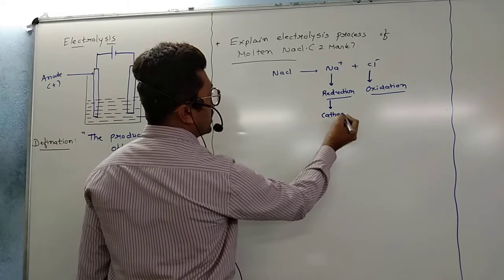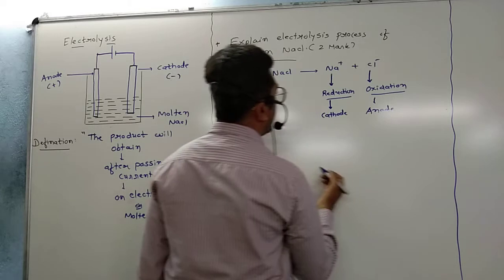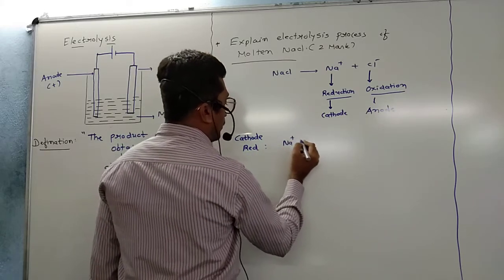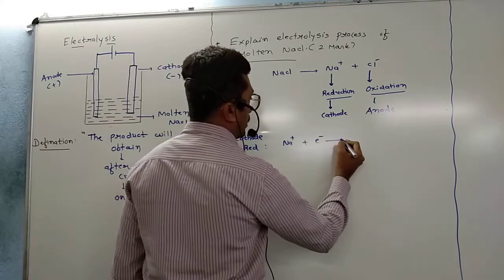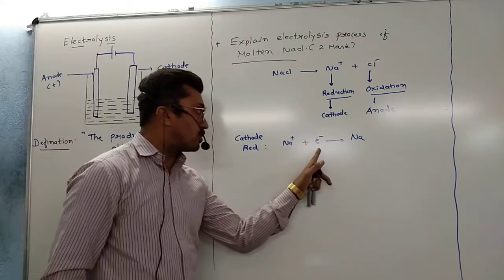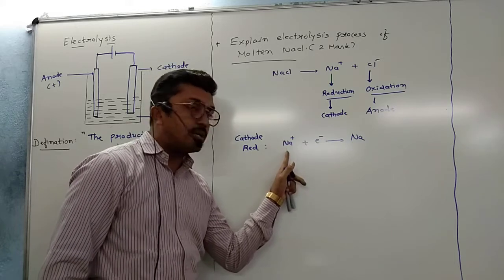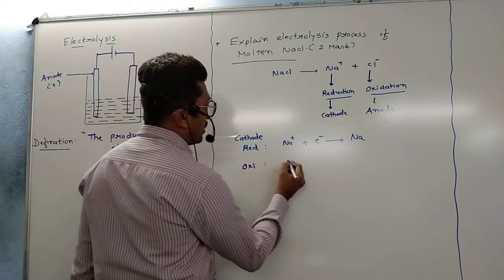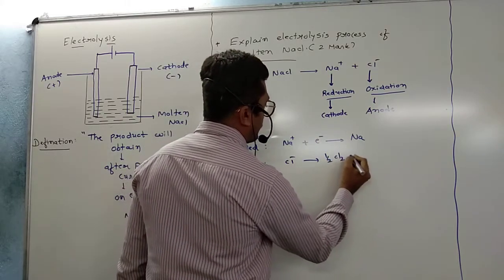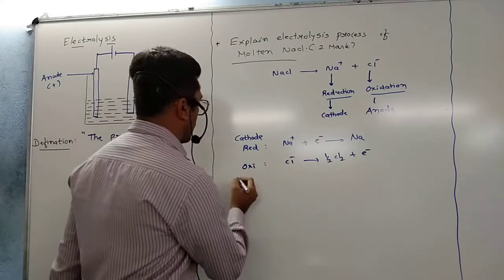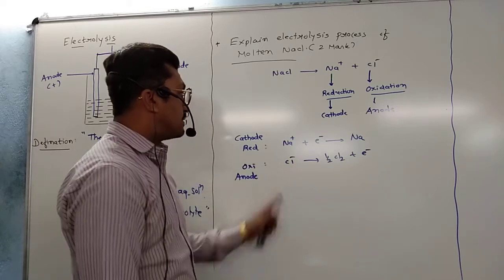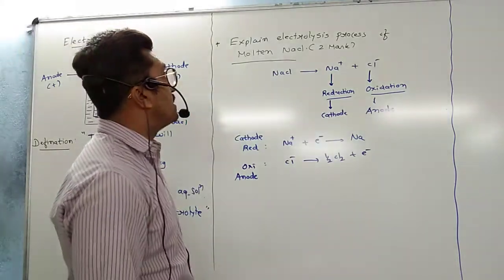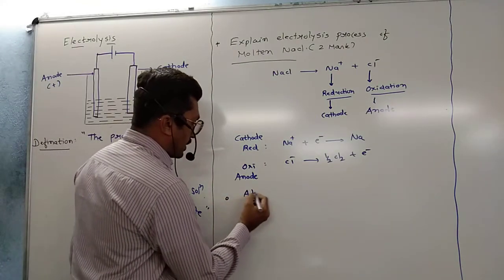Reduction process takes place on the cathode, and oxidation takes place on the anode. So which type of reduction process takes place on the cathode? Sodium⁺ will gain one electron and convert into sodium metal. Then, looking at the oxidation process at the anode: Cl⁻ after oxidation produces a chlorine molecule. Cl⁻ → ½Cl₂ + electron. So this is the process that takes place in the electrolysis of molten NaCl.